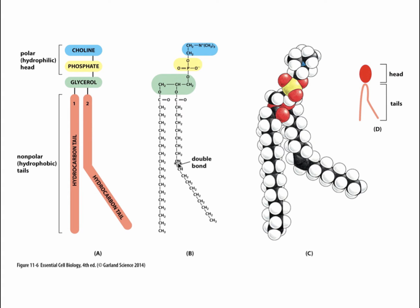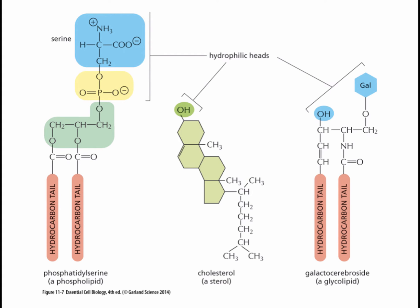Sometimes you get double bonds between carbon atoms, which cause the tail to change direction — we call this a kink in the fatty acid tail. Illustrated here are three alternative molecules found in membranes of various cells. One very common molecule is phosphatidylserine, which differs from phosphatidylcholine only at the end of the molecule, where there is a serine component rather than a choline component. In the middle, we have cholesterol — found only in the membranes of animal cells. Cholesterol is a steroid molecule which possesses these carbon rings.